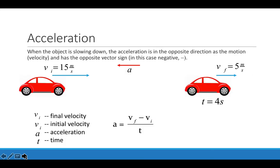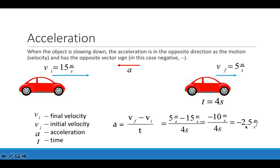We can also have a situation where an object is slowing down. Here, the car is traveling to the right with an initial velocity of 15 and a final velocity of 5, so it has slowed down. The time interval is again 4 seconds. The acceleration is final minus initial: 5 minus 15 divided by 4 seconds, giving negative 2.5 meters per second squared. This negative sign tells us the acceleration vector is pointing to the left, in the opposite direction of the velocity vectors. Anytime the acceleration points opposite to the velocity, the object is slowing down.